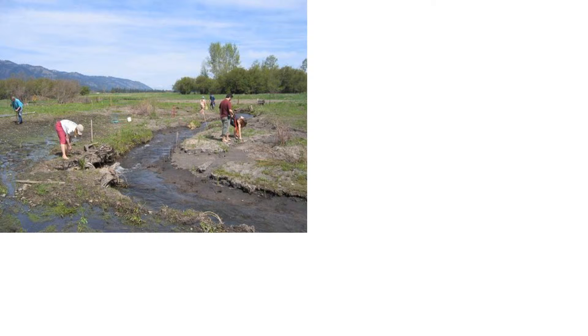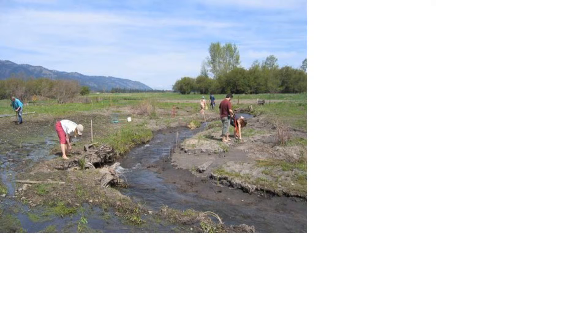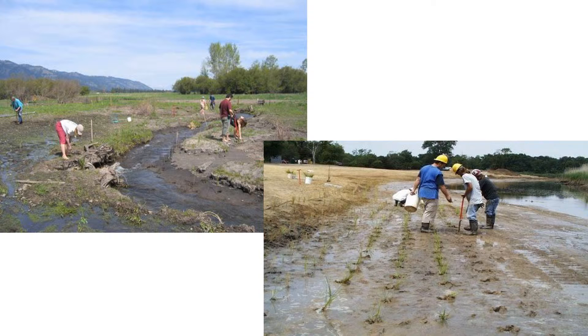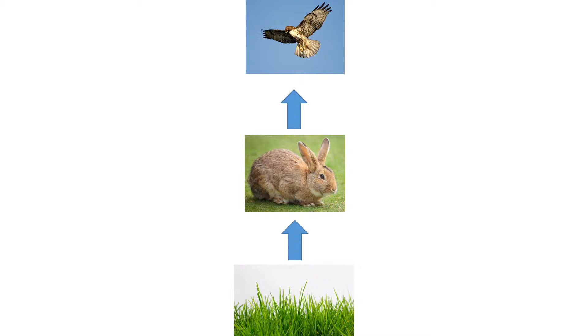Many current restoration projects focus on abiotic control and planting to provide high primary production for facilitation of diversity higher up on the food chain. This is a bottom-up approach to management.